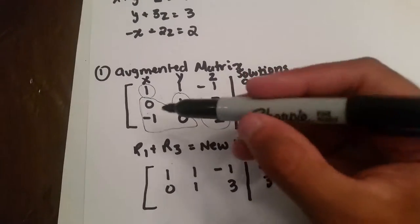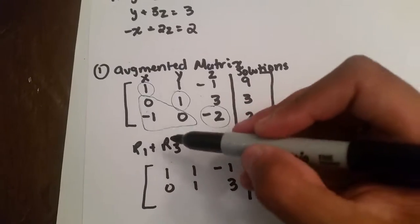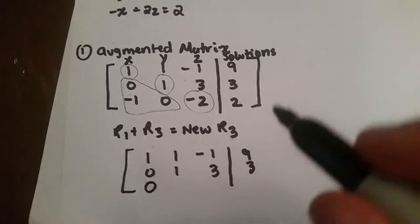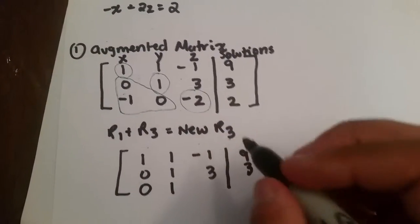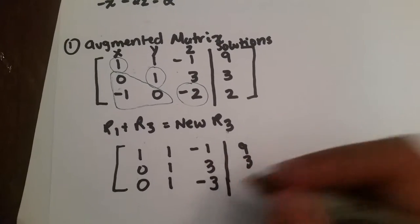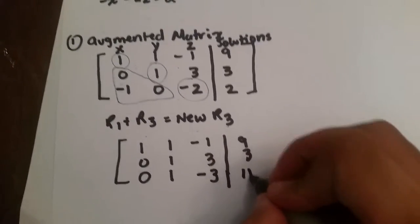So, row 1 plus row 3 would be 1 plus negative 1, which is 0, 1 plus 0, which is 1, and negative 1 plus negative 2, which is negative 3, and 9 plus 2, which is 11.